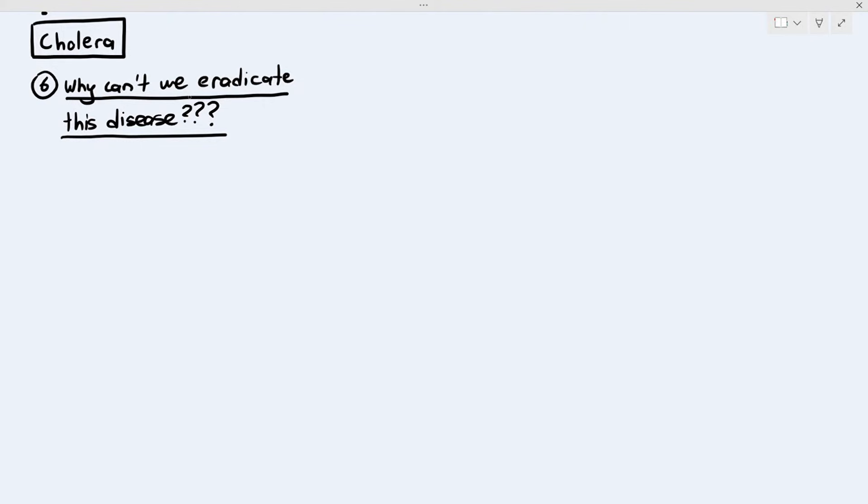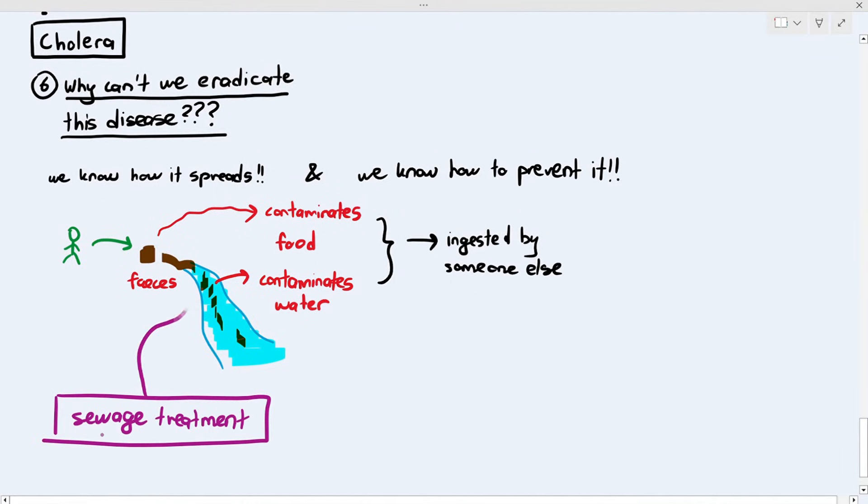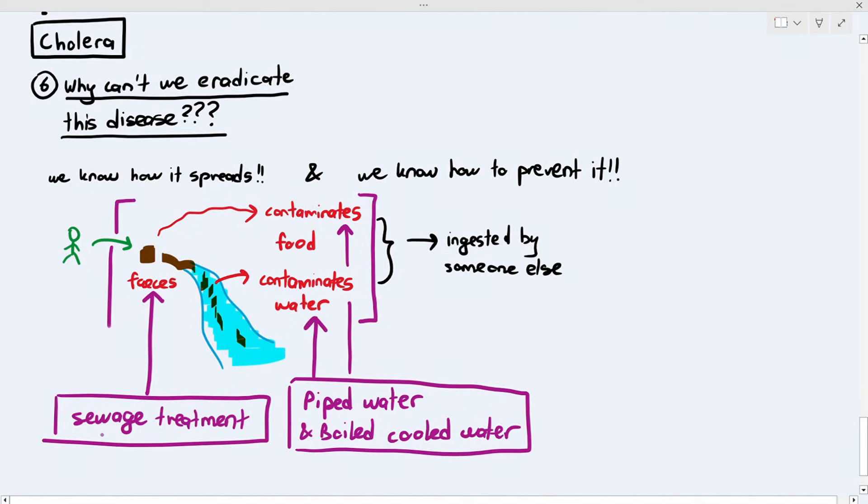Because, logically, we know how it spreads, we know how to treat it and we know how to prevent it. So, shouldn't this disease not exist in this world now? To prevent the feces from going into the water, we have sewage treatment and to prevent the person from drinking contaminated water, we have piped water and boiled cold water as well. So, there you go. Why does cholera still exist?